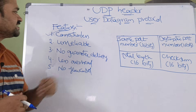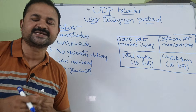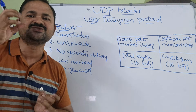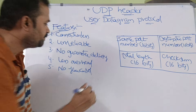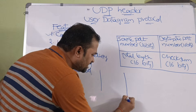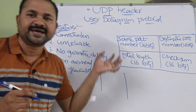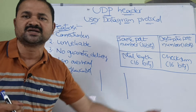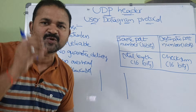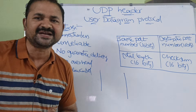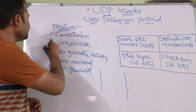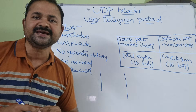The first feature is UDP is a connectionless protocol. There is no need of any connection between the source process and destination process. If the source process knows the address of the destination process, then directly the source process can send the packet to the corresponding destination process.